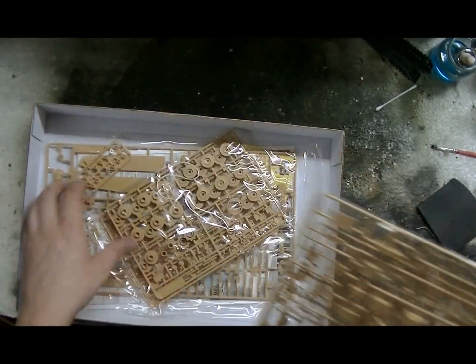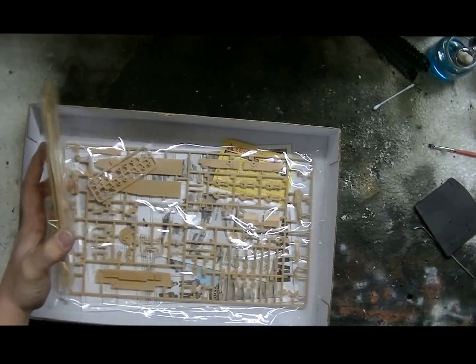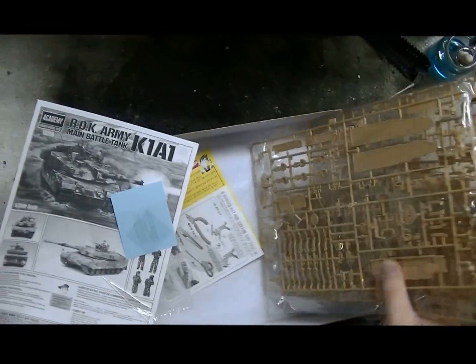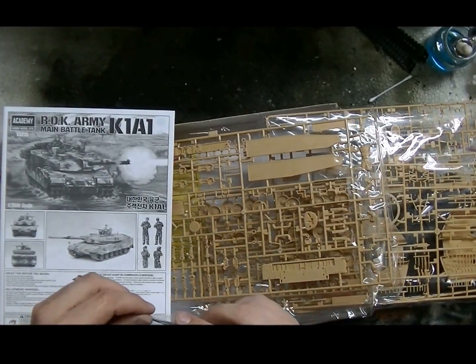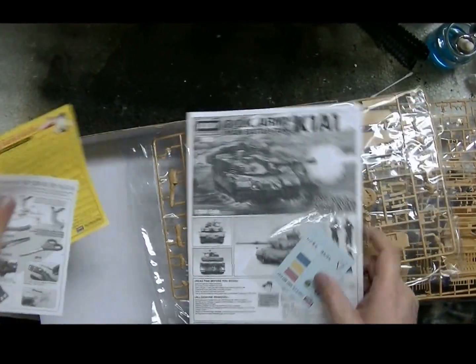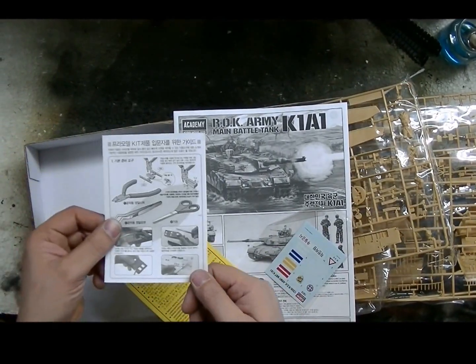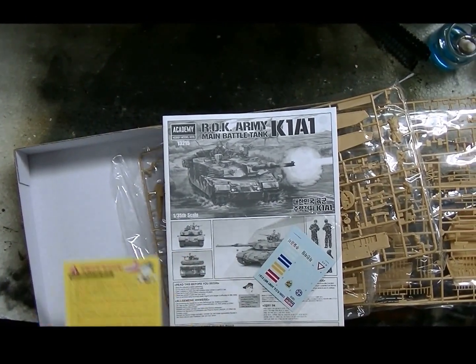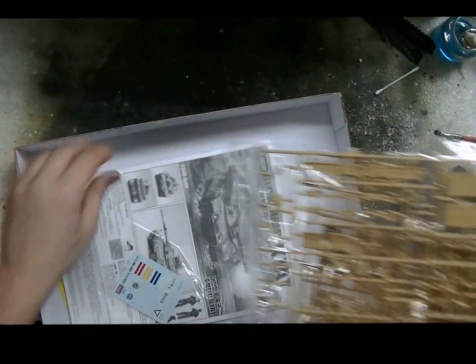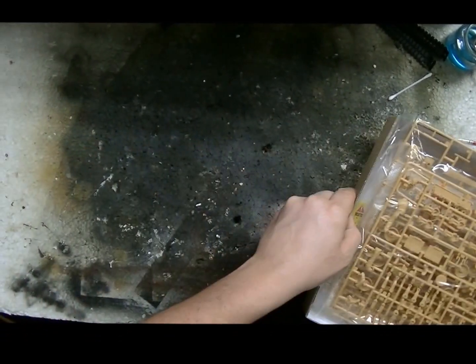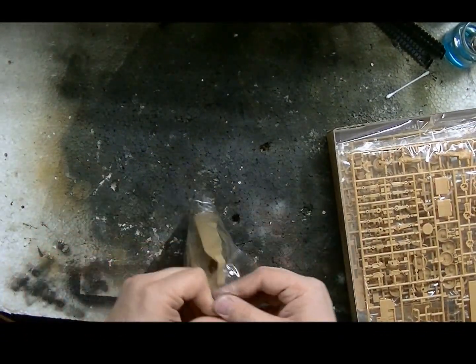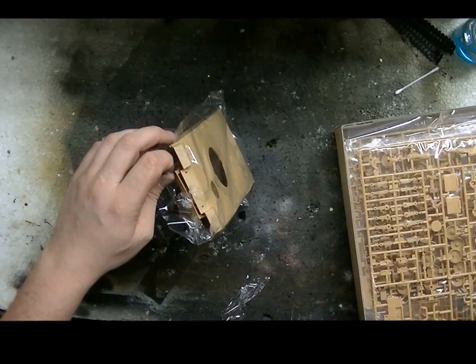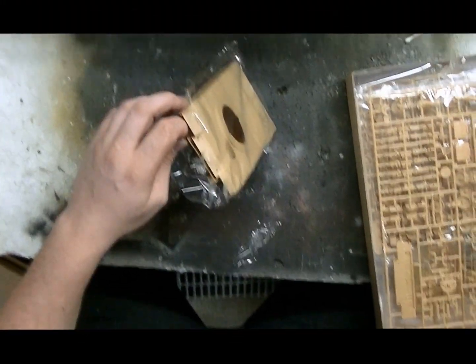We got one, two, four, five sprues, the instructions, a small decal sheet. Some tools you need to use or not and some warnings about where not to put it. Let's start with the sprues first. Heat shield bags, you gotta love them.